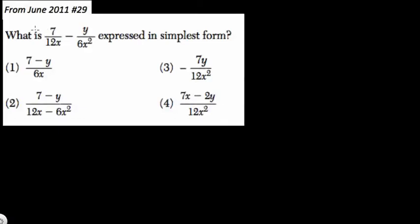Okay, so we have an algebra problem here with fractions, and we want to express in the simplest form. We have 7 over 12x minus y over 6x squared. How do we do this?